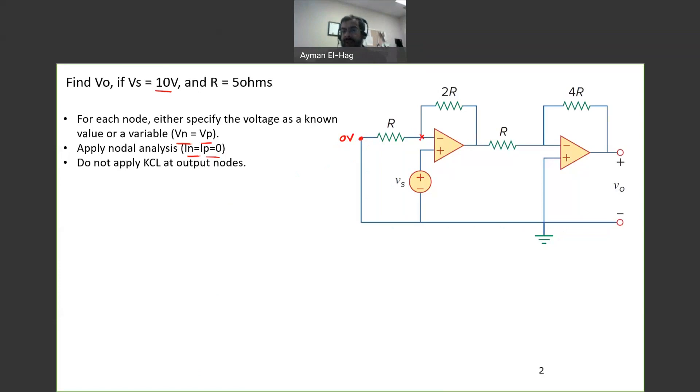Now this node is the VN, the negative terminal voltage, which is equal to the V positive. And the V positive is the voltage between here to the ground, which is Vs. So the voltage here is Vs, and the voltage here is also Vs. Let's move here. This is the output of the first op-amp, and we don't know the voltage here, so I will call it Vx.